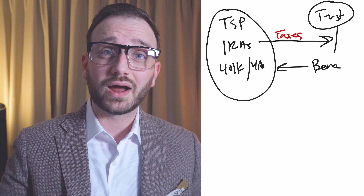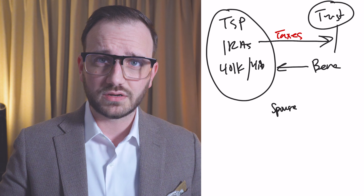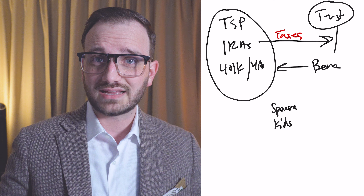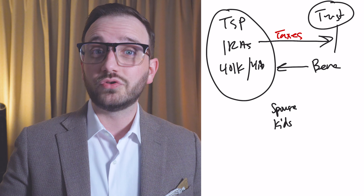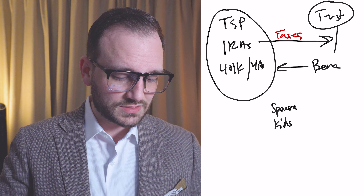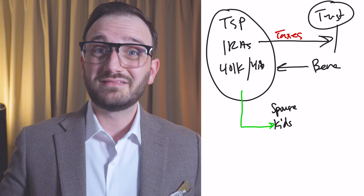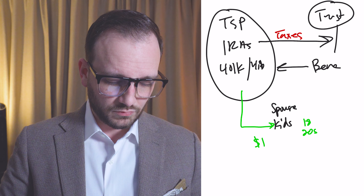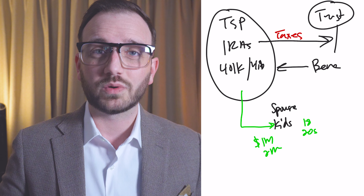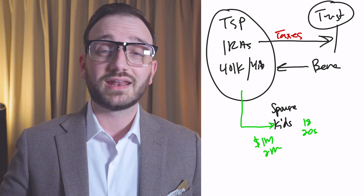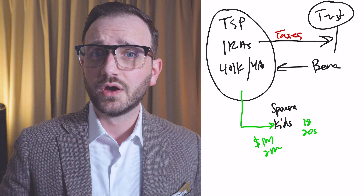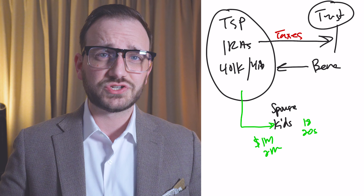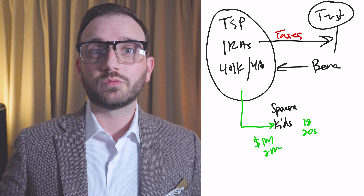For example, many of you have your TSP or IRA with the primary beneficiary being your spouse if you're married, and then your kids listed as contingent — the beneficiary that gets the assets if the primary is no longer alive. The problem with this is, let's say both you and your spouse pass away at the same time. The kids are essentially going to receive that inheritance directly. Maybe your kids are in college or mid-20s, and you might not want to leave one or two million dollars directly to them when they are so young.